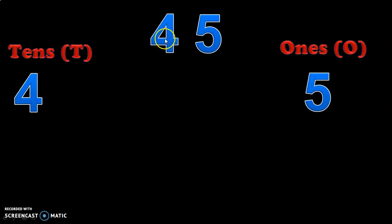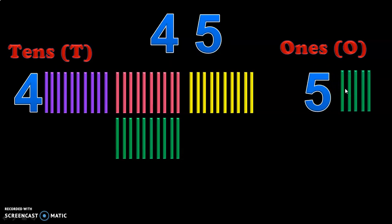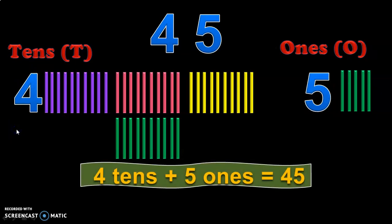Let us consider the number 45. Five represents the ones place and four is in the tens place. How do you represent four tens? That is nothing but four groups of tens. Here we have one, two, three, four, five, six, seven, eight, nine, ten — this is the first group. Similarly we have four groups of tens representing 40. So the number is four tens and five ones, which is equal to 45.